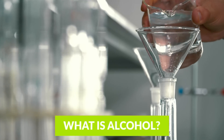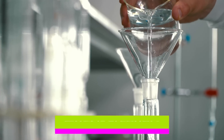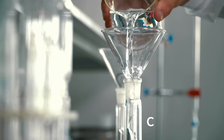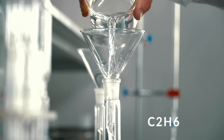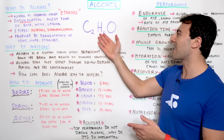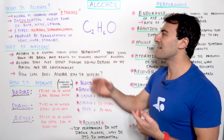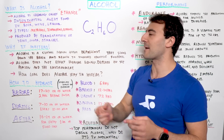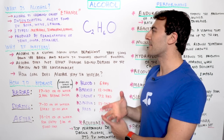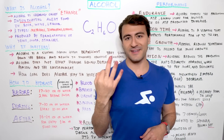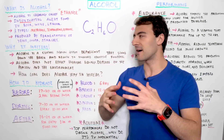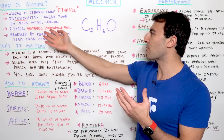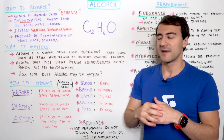So chemically, alcohol is called ethanol, and the chemical formula is C2H6O — that's carbon, hydrogen, and oxygen — and it is an intoxicating agent that is found in beer, wine, and liquor. There are three different types: methanol, isopropanol, and of course, ethanol.